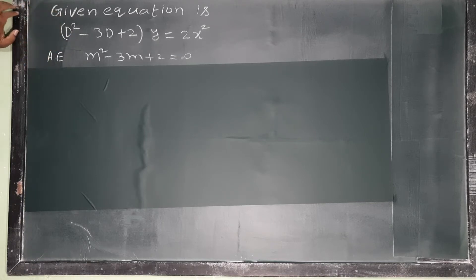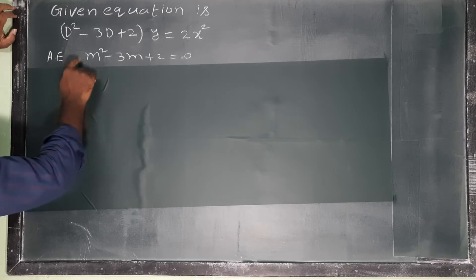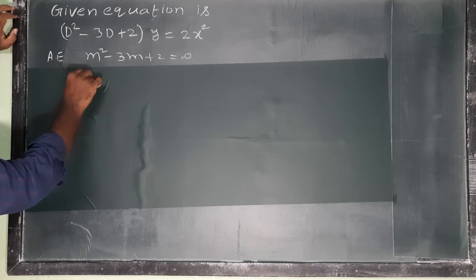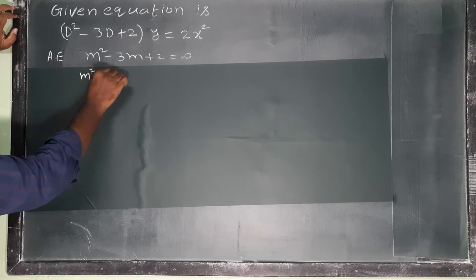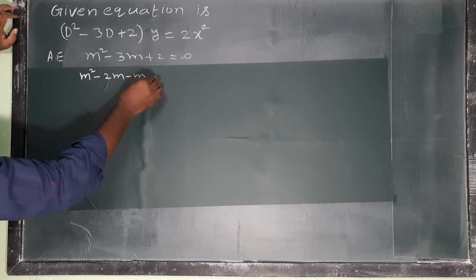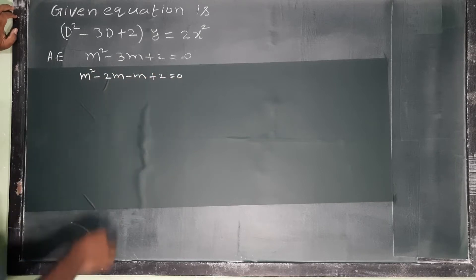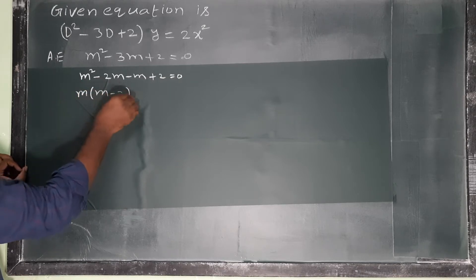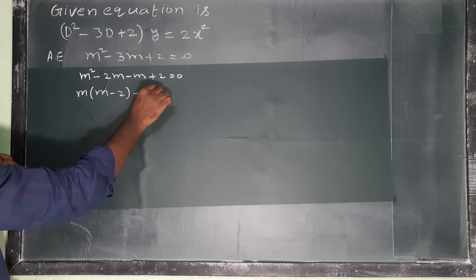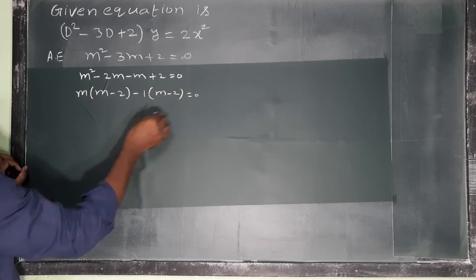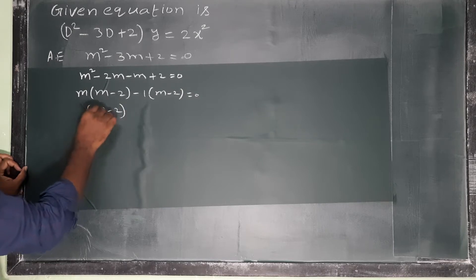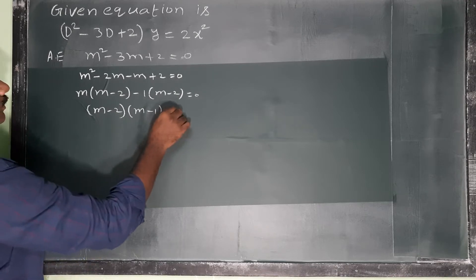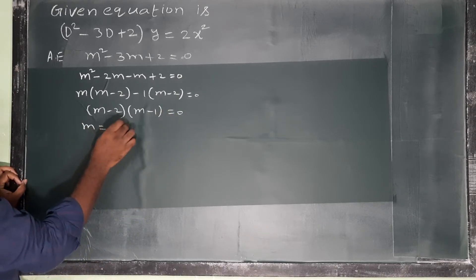Just replace D with m. Next, factorization. The coefficient of m² is 1, constant is 2. This can be written as m² - 2m - m + 2 = 0. Taking m as common from the first two terms, we get m(m - 2), and taking -1 as common, we get -1(m - 2) = 0. Therefore, taking (m - 2) as common, we get (m - 2)(m - 1) = 0.